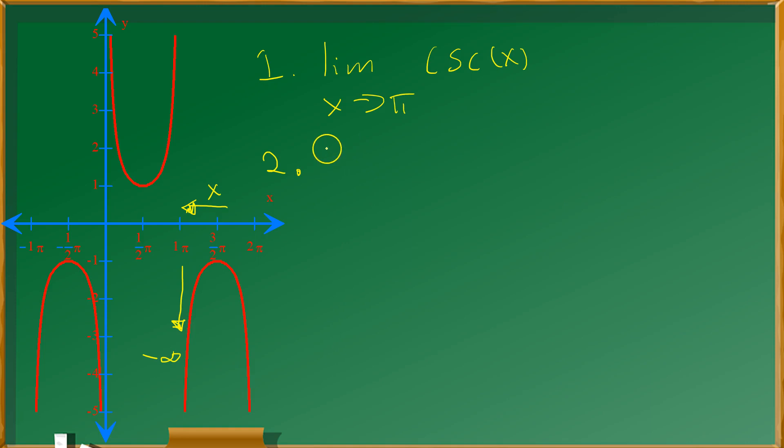So for that reason, you can say, for example, that the limit as x approaches pi from the right, that's what the plus means, of cosecant of x is equal to negative infinity.